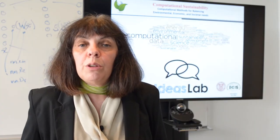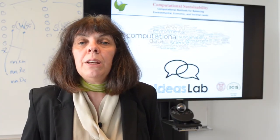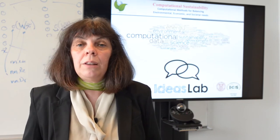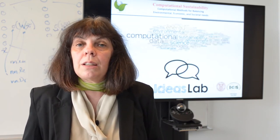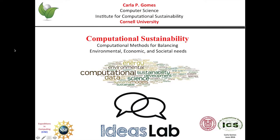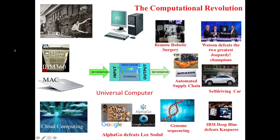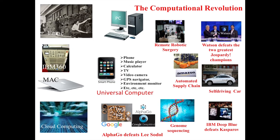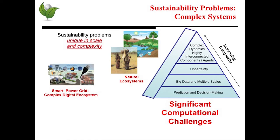Today I hope to give you the big vision behind the new interdisciplinary field of computational sustainability pioneered at Cornell. Computers and computational thinking have revolutionized our lives. The smartphone is the ultimate example of a universal computer — apps transform the phone into different devices. Unfortunately, the computational revolution has done little for the sustainability of our Earth.